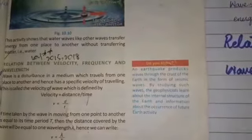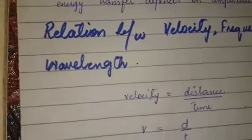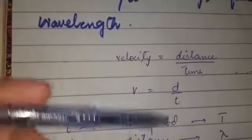So, first of all, what is the relation between the two? We know velocity or distance over time is equal to d over t.